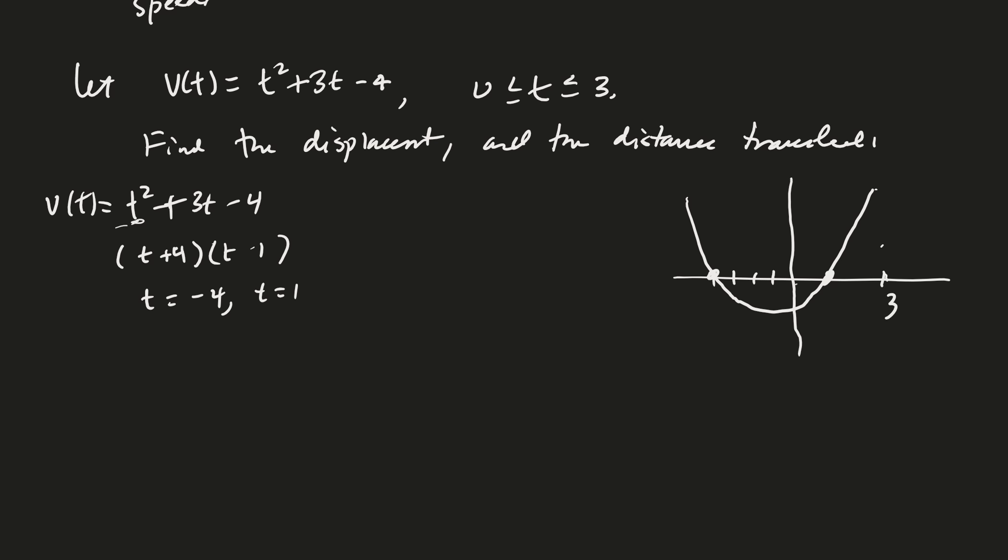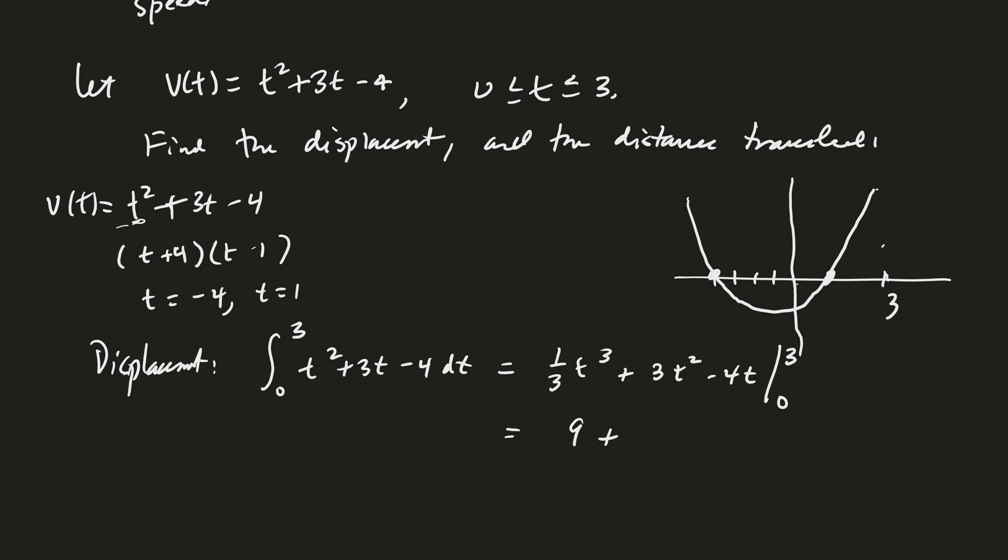My displacement would just be the integral from 0 to 3, t squared plus 3t minus 4 dt. And so I just anti-differentiate. 1 third t cubed plus 3 halves t squared minus 4t. Evaluate from 0 to 3. What is that going to be? 3 cubed over 3 is 3 squared, so that's 9 plus, that's 3 cubed, 27 minus 4 times 3 is 12. I better watch myself here. I see an error. If that's t squared, that needs to have it divided by 2 there. And now if you sum all that together, we end up with 21 over 2.